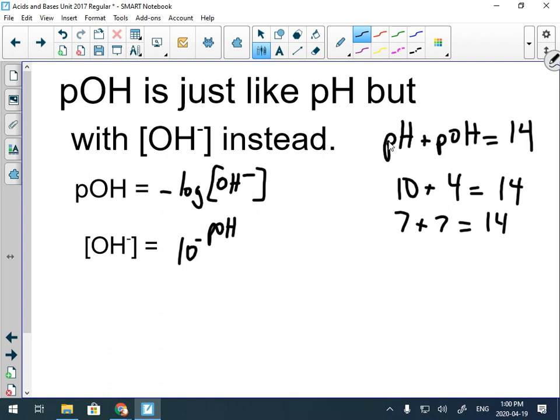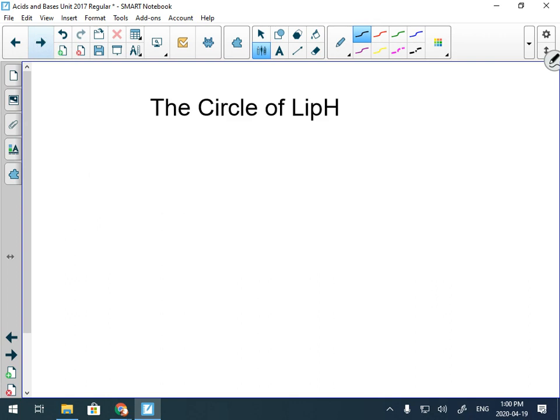That leads us to the Circle of Life. The Circle of Life is a good way to try to remember how all of these different formulas interact. Those of you moving on to Chemistry 30, you have to memorize all of these formulas. You're not given these formulas on quizzes, tests, or the diploma. So here's what the Circle of Life looks like, and after I'm done talking, you should pause this video and sketch this out yourself for notes.